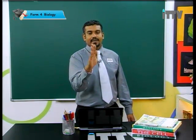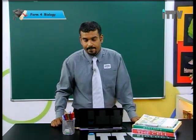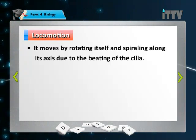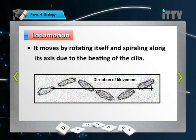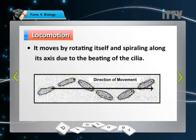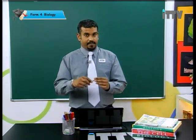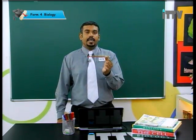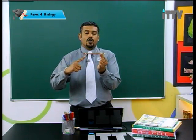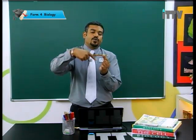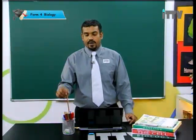Every time the cilia carry out this beating movement, it allows movement in the water since Paramecium lives in water. Paramecium also moves by rotating itself and spiralling along an axis due to the beating of the cilia. Imagine there is an axis and the Paramecium rotates along this axis — because it is spiralling along the axis, it produces that specific spiral movement.